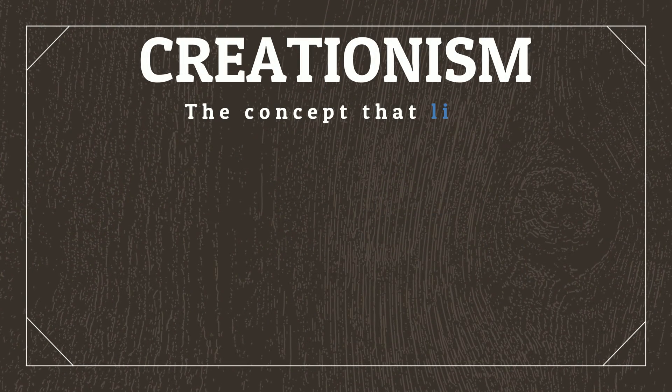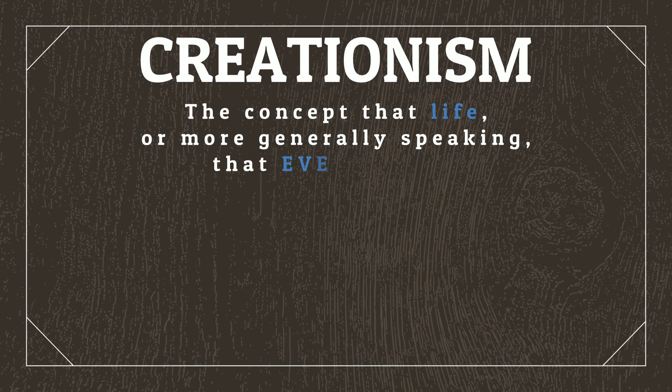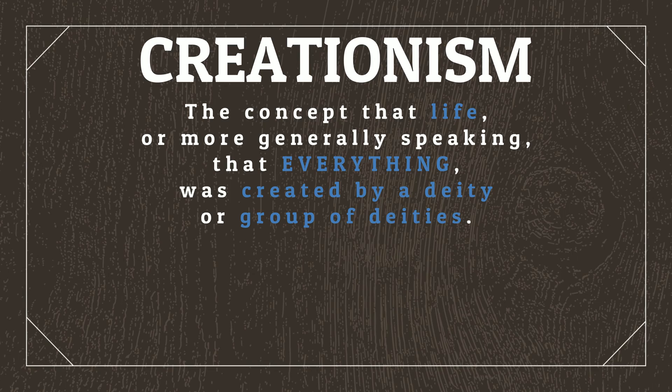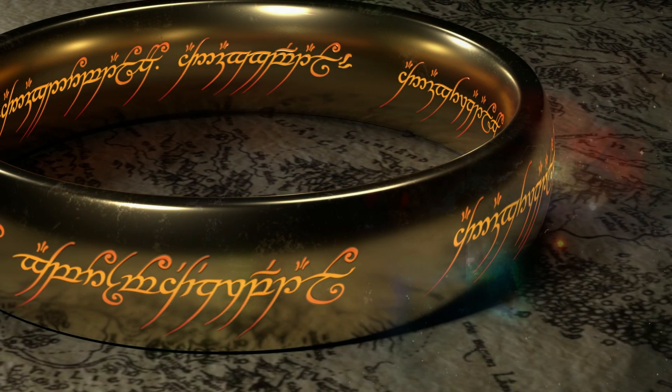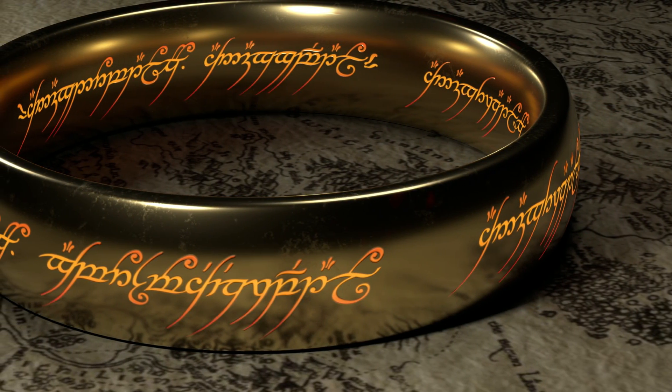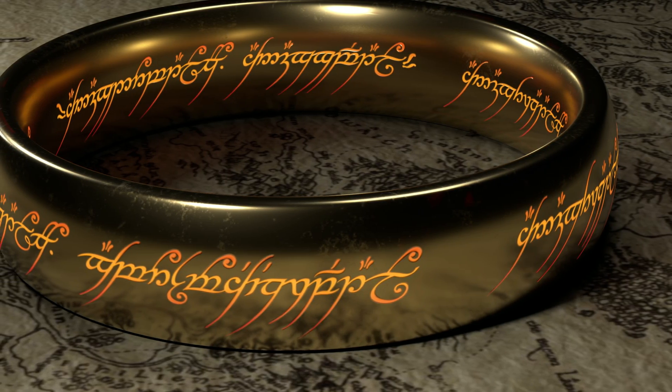Perhaps the most straightforward answer a worldbuilder can use for how abiogenesis occurred is creationism, which is the concept that life — or more generally speaking, that everything — was created by a deity or group of deities. While this doesn't really work for the world that I'm building, it isn't an uncommon selection, and many famous literary works use their own creation story to answer how things came about. One of my personal favourites is Lord of the Rings, where divine beings literally sang creation into existence.